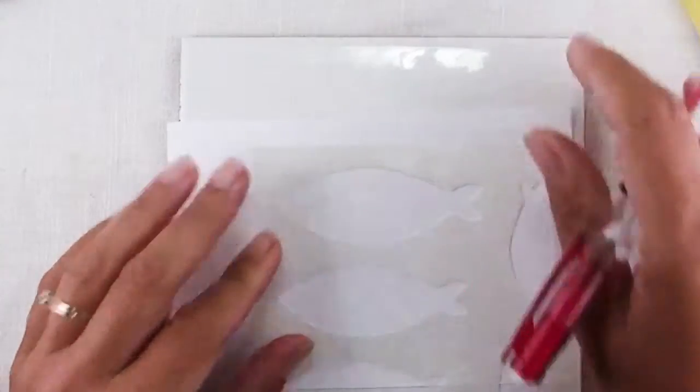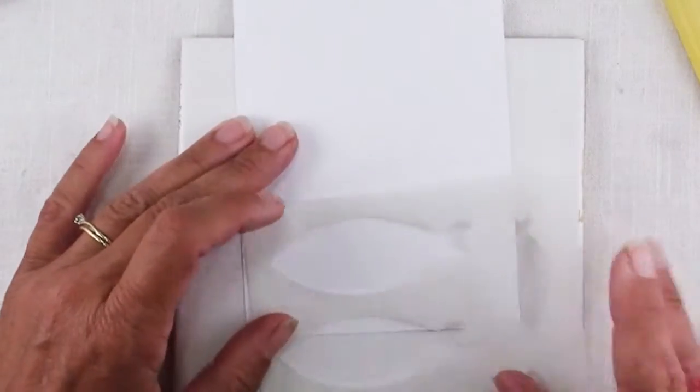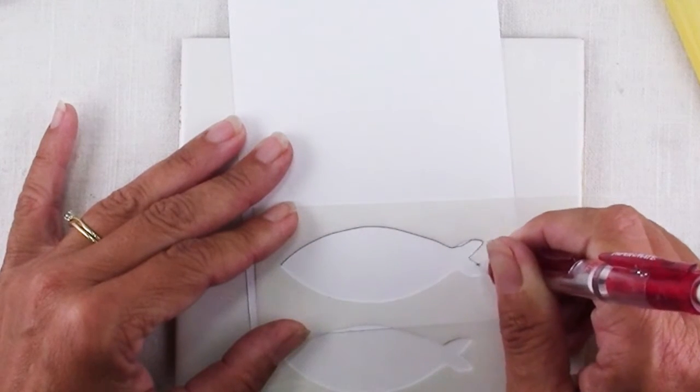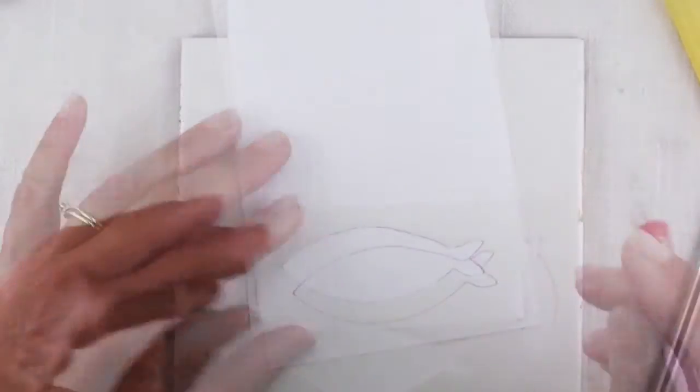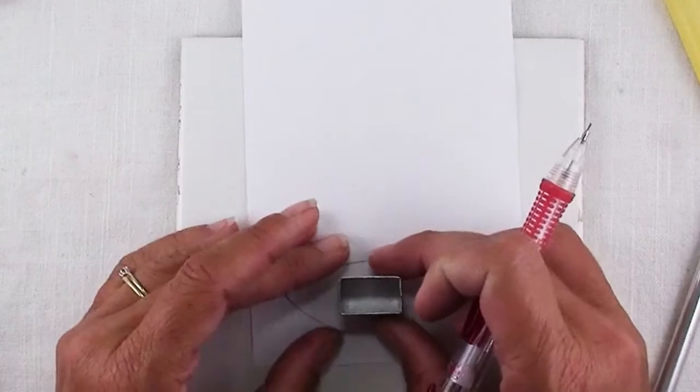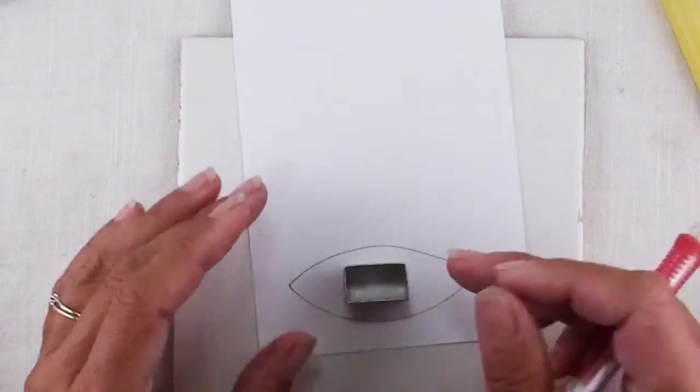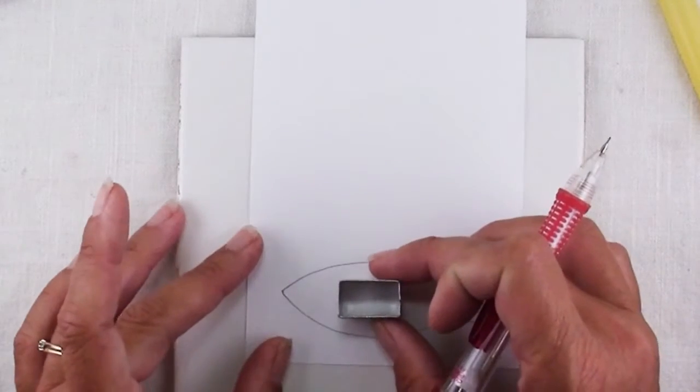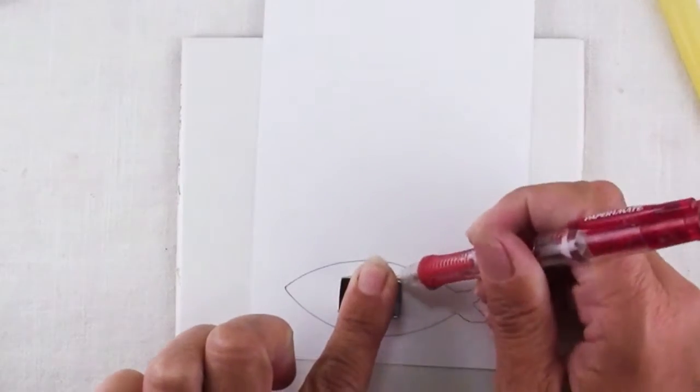In order to get the placement for your luggage tag accurate, you need to make yourself a little template. So I have here just a piece of index card and a pencil and I'm going to trace my fish on the card. I'm going to use this little 1.5 inch by 3.25 inch cutter to cut out the slot in one of the pieces where the name and address will show through the tag.